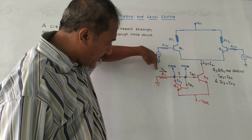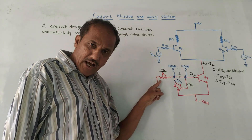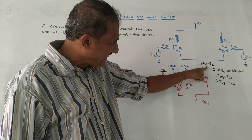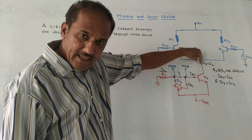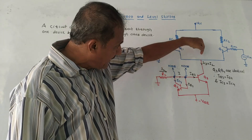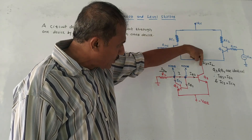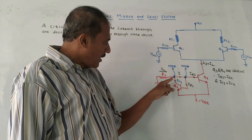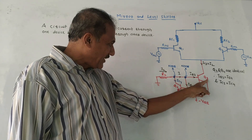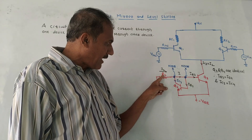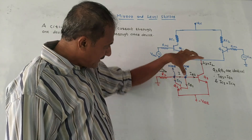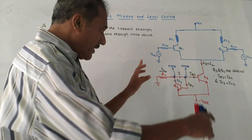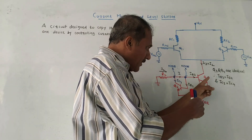Current I2 is the current flowing through resistor R2. We can make I2 equal to IC3. Even though the notation is collector current, this is the same as the emitter current of Q1 and Q2. We have to design the circuitry — Q3, Q4, and R2 — in such a way that this current I2 will be equal to IC3.